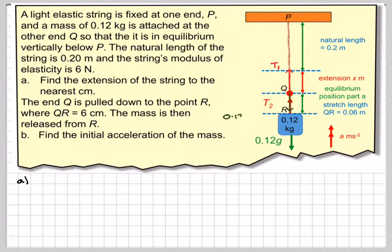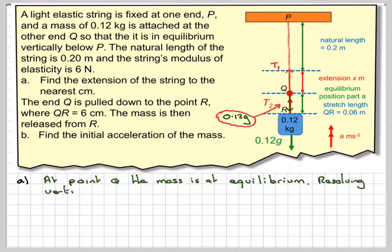So for part A, we've got the tension acting upwards, T1, so we're looking at the point Q here, and the weight acting downwards, which is going to be 0.12 G. At point Q, the mass was in equilibrium, therefore resolving vertically, we're going to have that T is going to be equal to 0.12 times G.